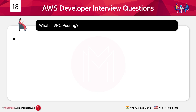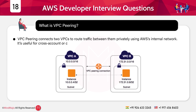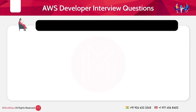Question 18: What is VPC peering? Answer: VPC peering connects two VPCs to route traffic between them privately using the AWS internal network. It is useful for cross-account or cross-region communications without using public IPs.